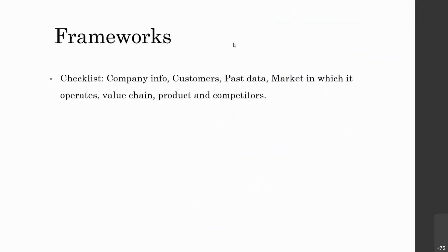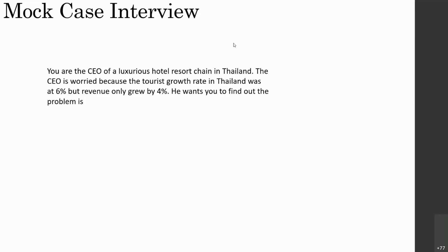You can also ask questions about the value chain — nothing but the supply chain through which a product reaches the customer. Entities can include the manufacturer, raw material supplier, wholesaler, retailers, warehouses, and transportation. Based on the question you should check whether a particular part of the value chain is causing the issue, or if values are fine and you need to look at other aspects. Once you realize a segment is clear, move to the next one.